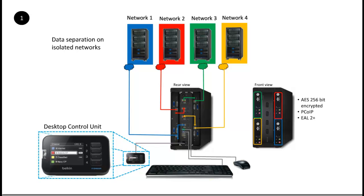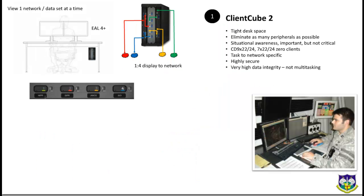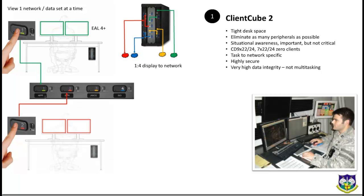We'll talk in a second about how elegantly this thing mounts underneath the desktop, but you also see we have a desktop control unit, or DCU, that allows you to switch between the multiple networks or domains — a very small device that sits on the edge of the desktop. This is essentially how this first use case works: you literally push one of the buttons like any traditional KVM, and you interact with dual display on one of the networks. Push a different button, the two displays are taken over by the new network or application.